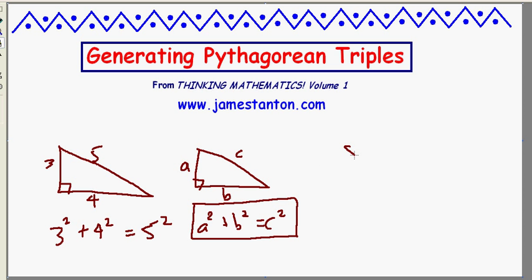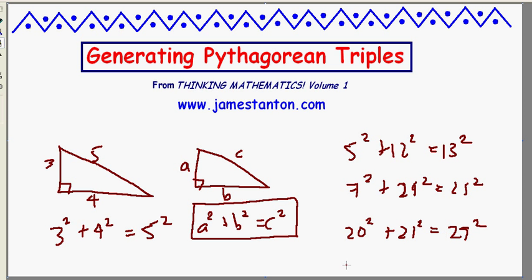Another example of a Pythagorean triple is 5 squared plus 12 squared is 13 squared. Some people have that in their heads. I believe 7 squared plus 24 squared is 25 squared. One of my favorites is 20 squared plus 21 squared is 29 squared.